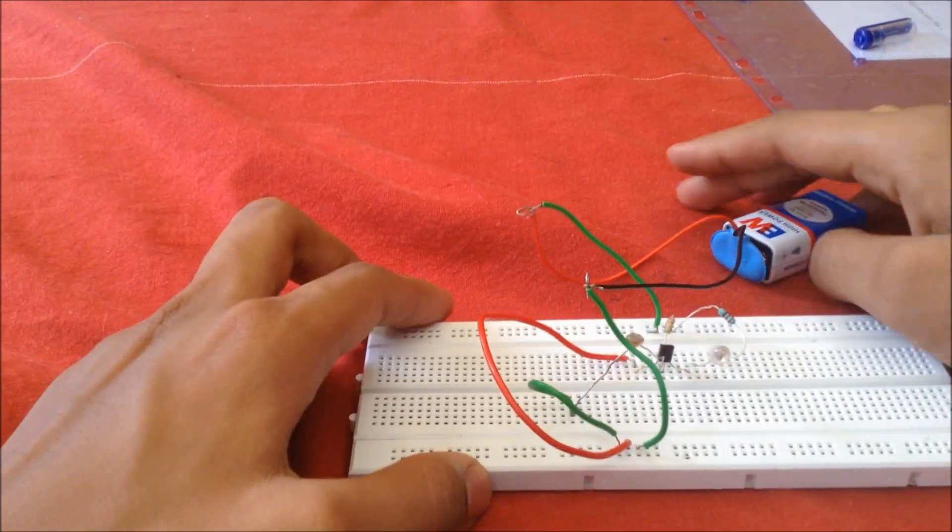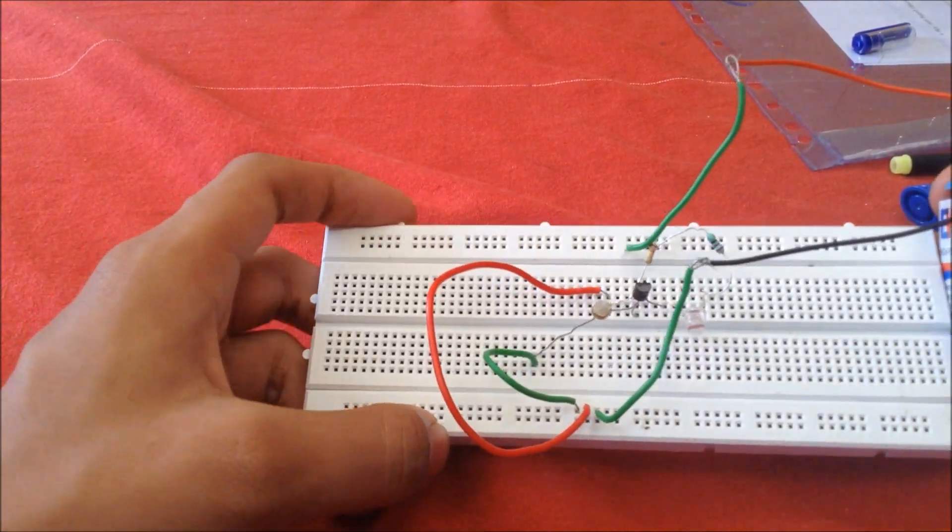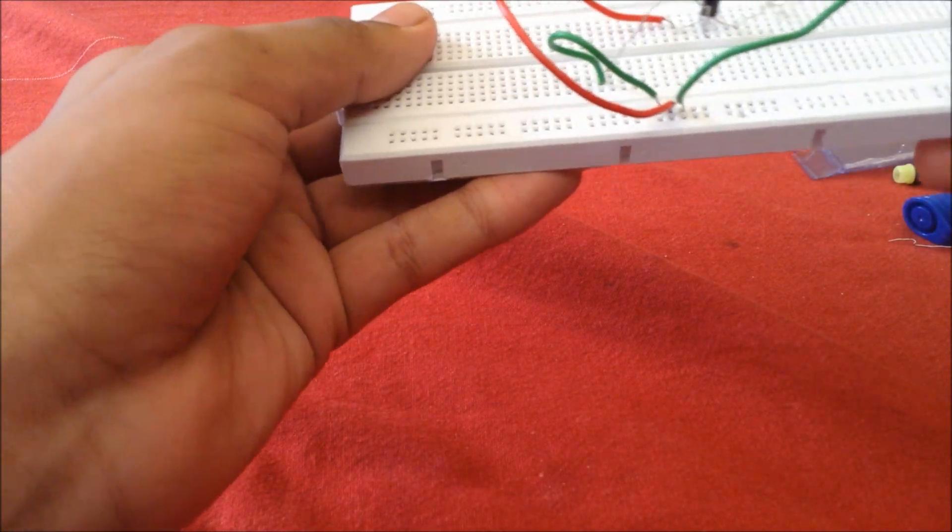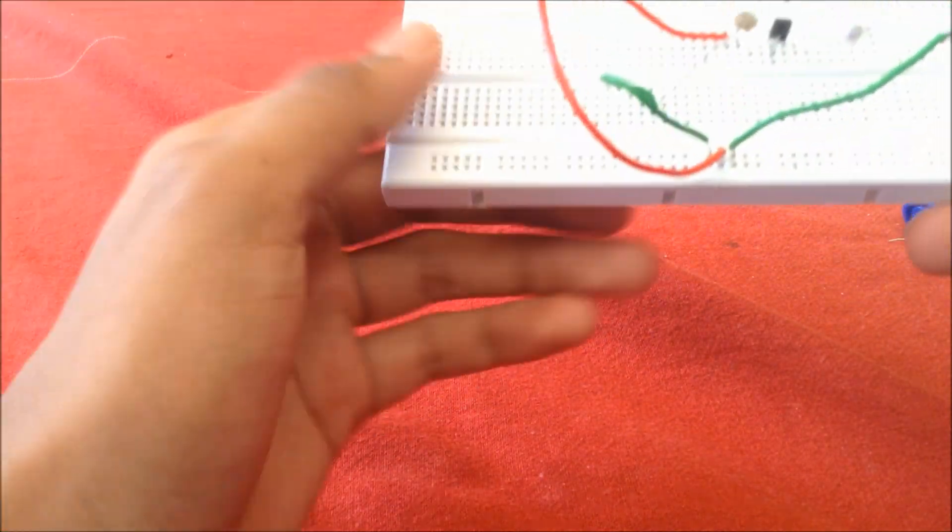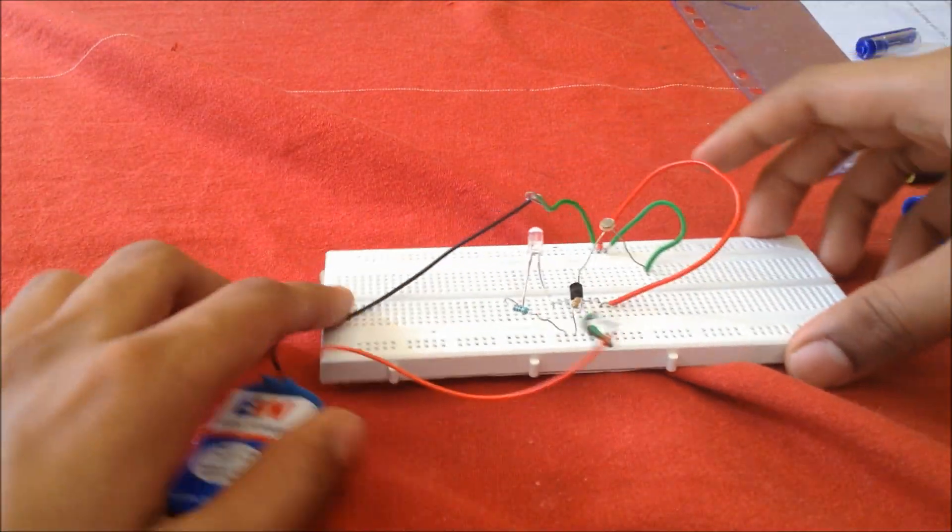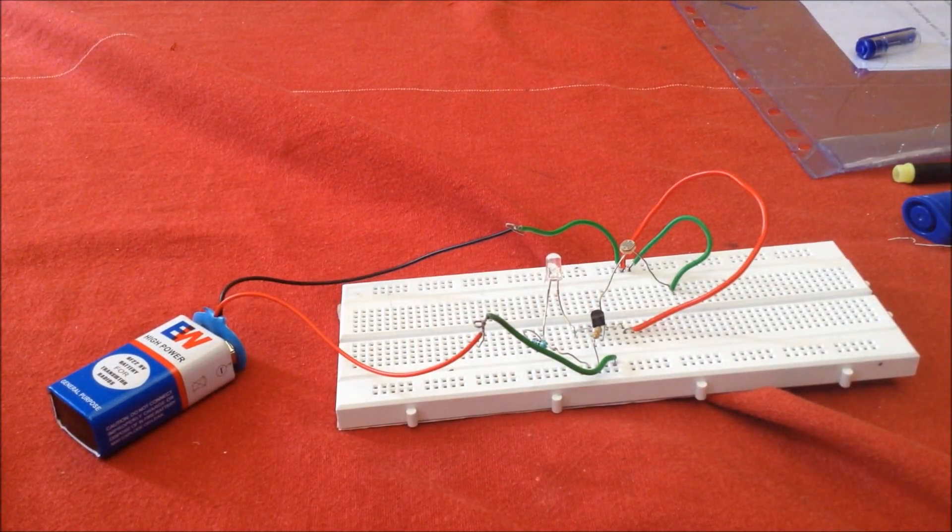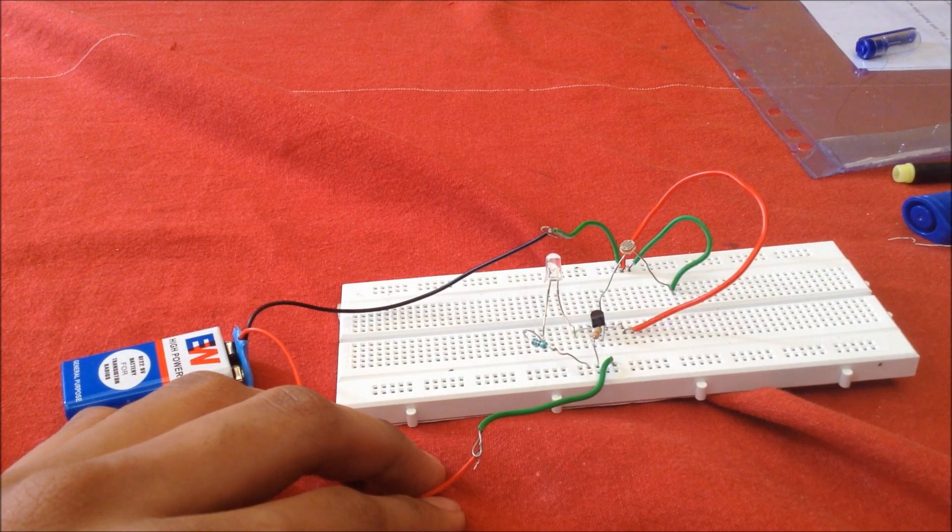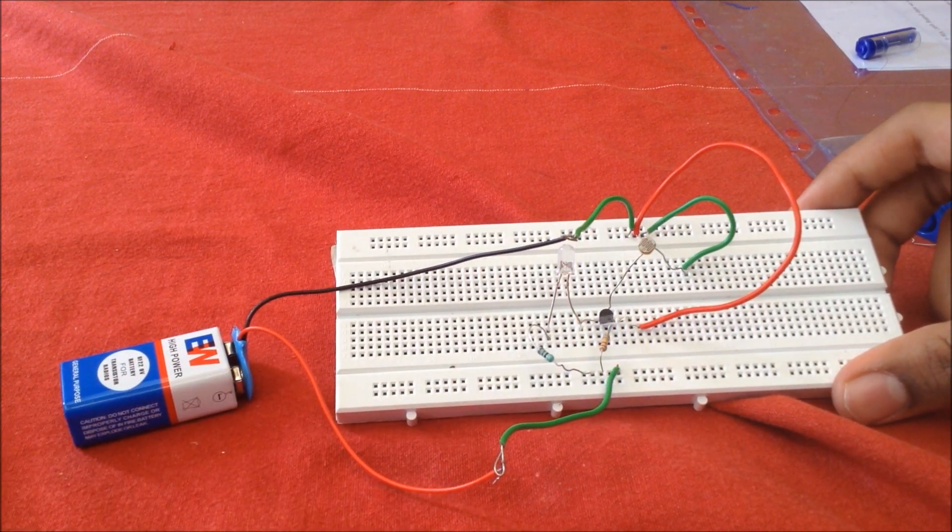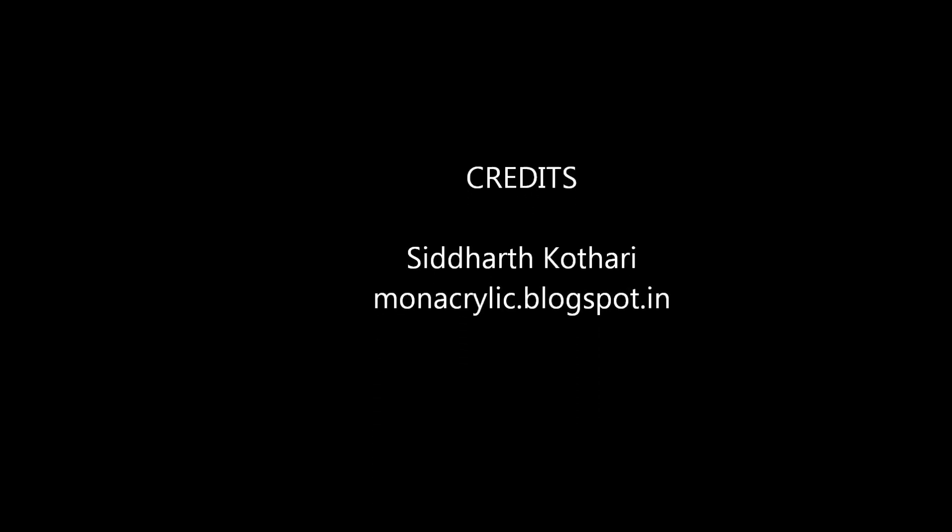So that's it. I hope you enjoyed it and you can have a final look at the circuit, once again in case you messed up anywhere. Here is the transistor, the LDR, and the resistors in series. Thank you.